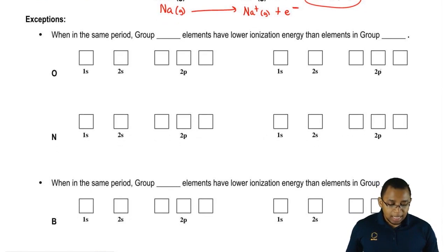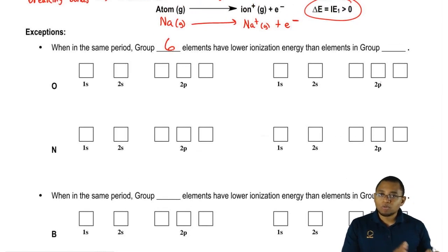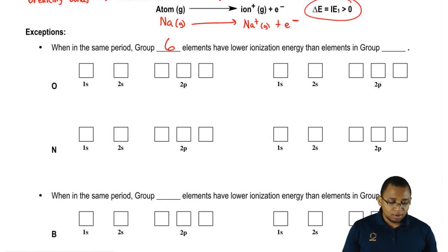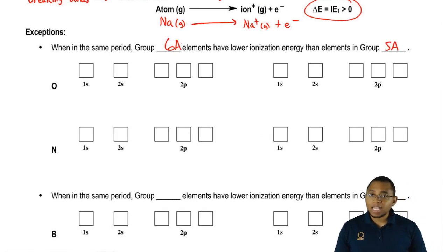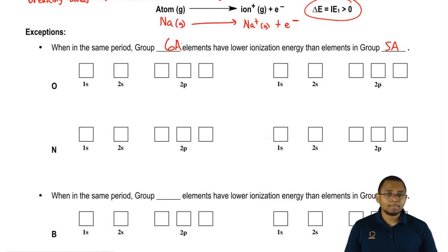When in the same period, group 6A elements, even though they're more to the right, actually have a lower first ionization energy than group 5A elements in the same period.